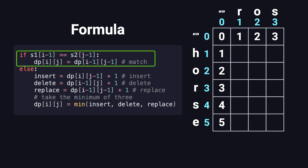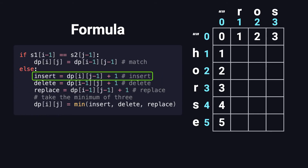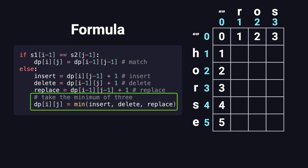If the current characters are the same, we simply copy the value from the top-left diagonal cell — that's DP[I-1][J-1] — because no operation is needed. If the characters are different, we have three choices: insert (look at the left cell DP[I][J-1] and add 1), delete (check the cell above DP[I-1][J] and add 1), or replace (look at the top-left diagonal DP[I-1][J-1] and add 1). We take the minimum of these three values and fill it into the current cell. Since all three choices add 1, we simply take the minimum of the three neighbors and add 1. We fill the table row by row and column by column, and once we reach the bottom-right cell, we have our answer — the minimum edit distance.